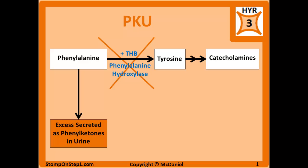You treat PKU the same way you would treat a lot of different enzyme deficiencies. You're going to try to restrict the substrate from the person's diet and give whatever product it is. So you're going to put this patient on a diet that limits the amount of phenylalanine they take in and also supplement tyrosine through some sort of vitamin.